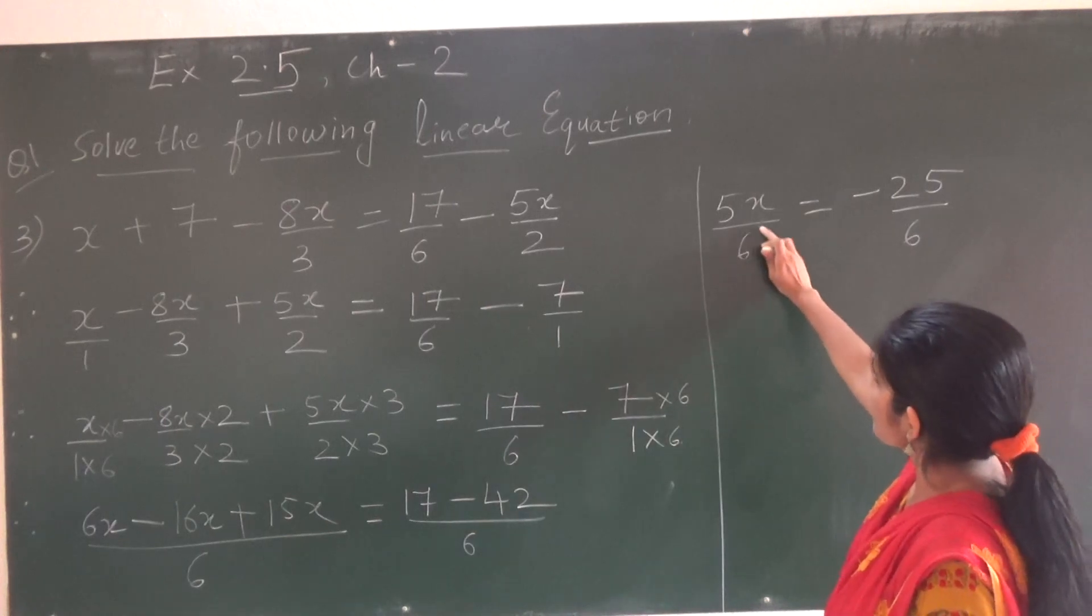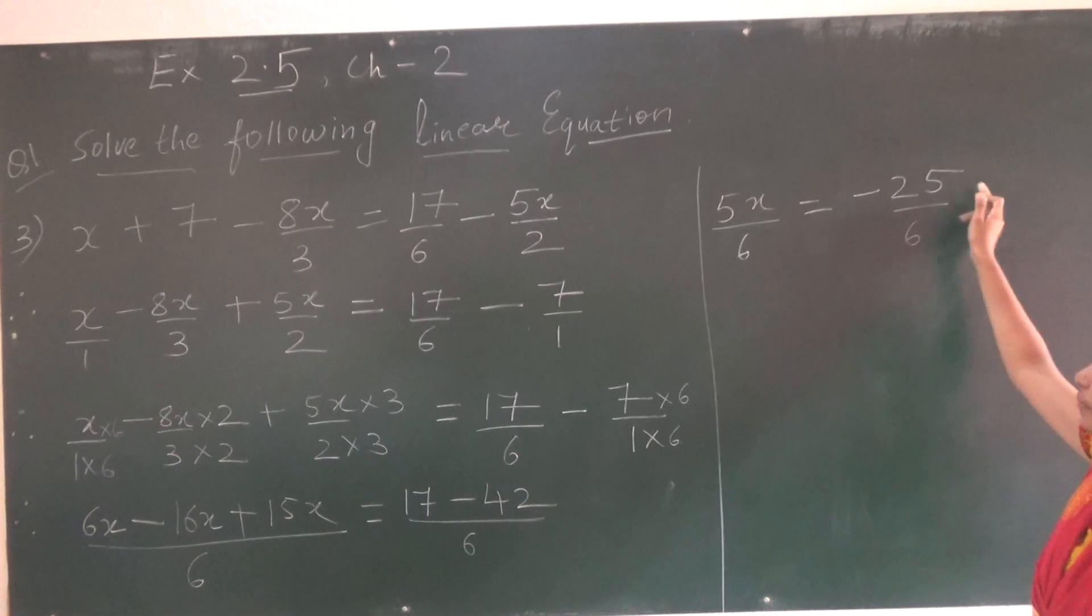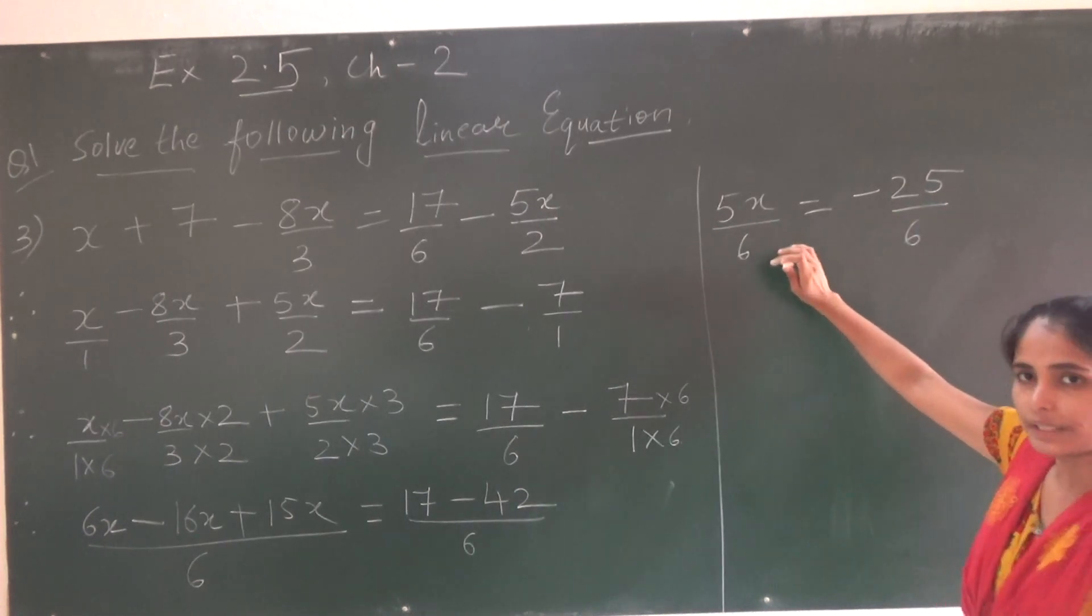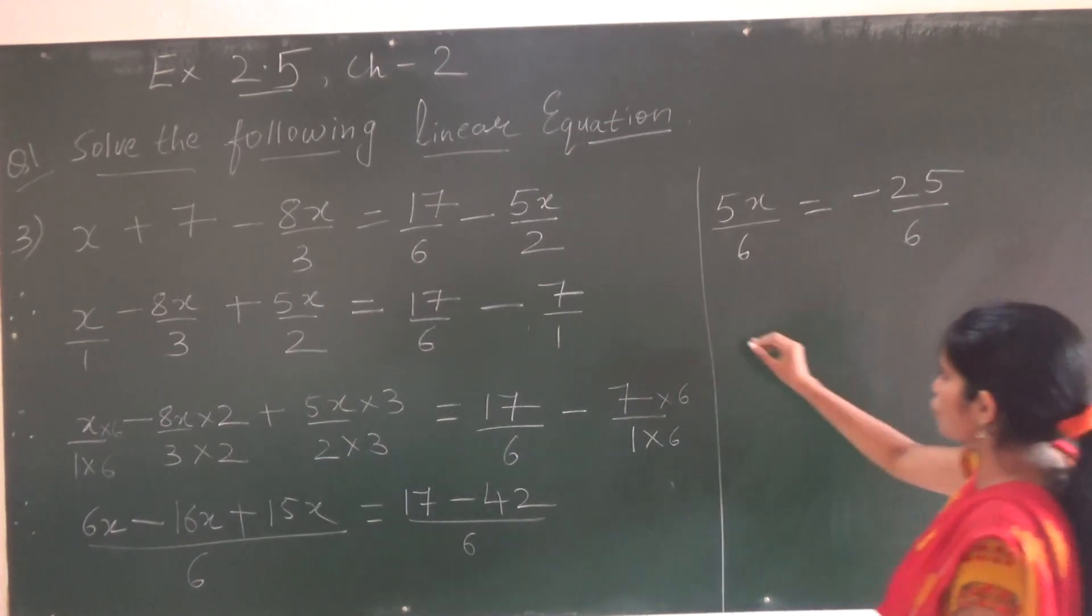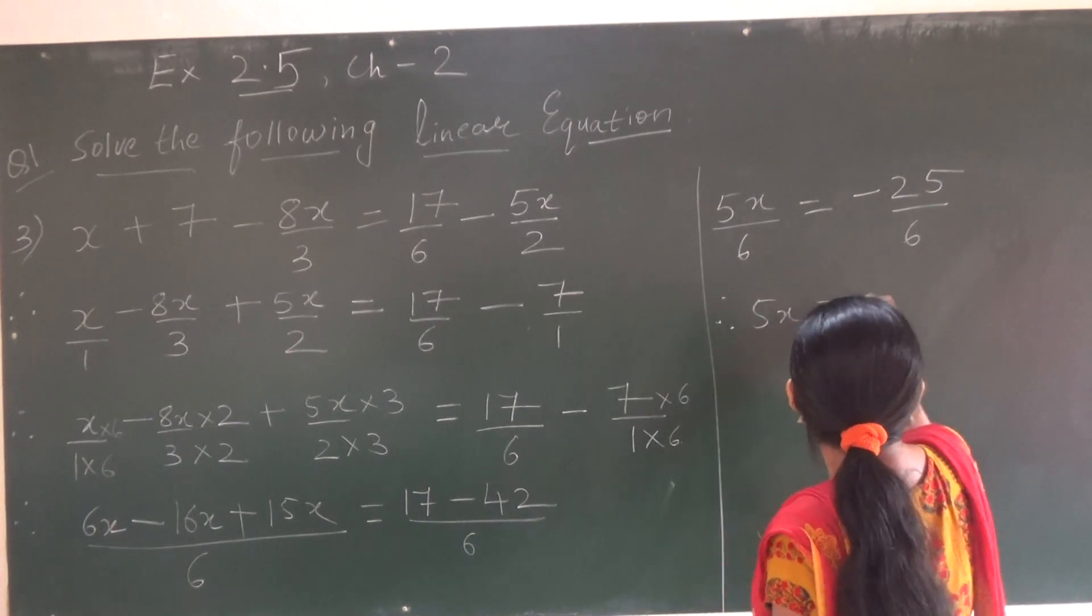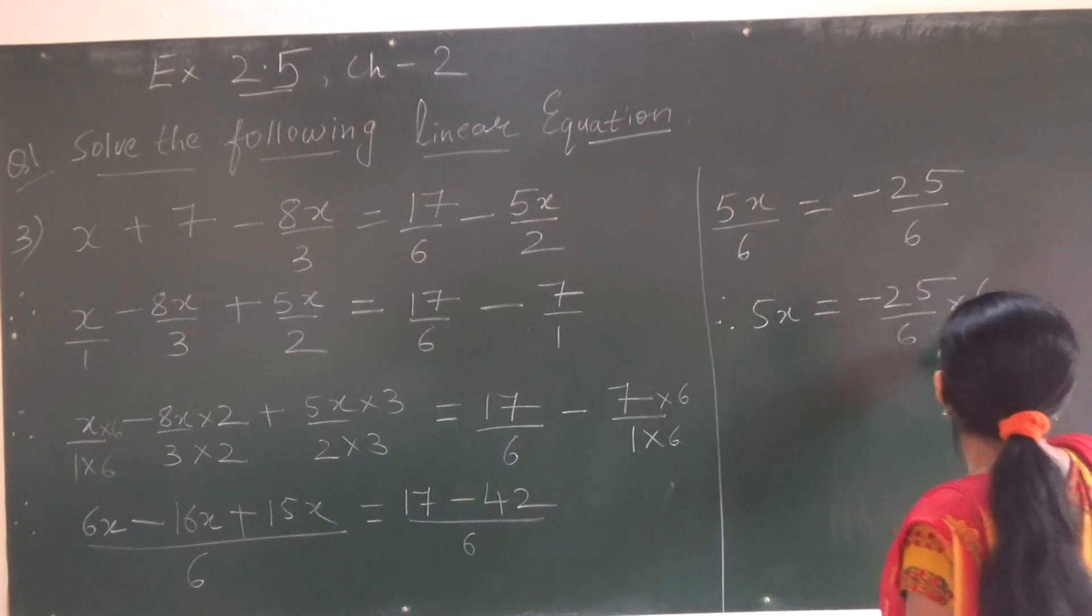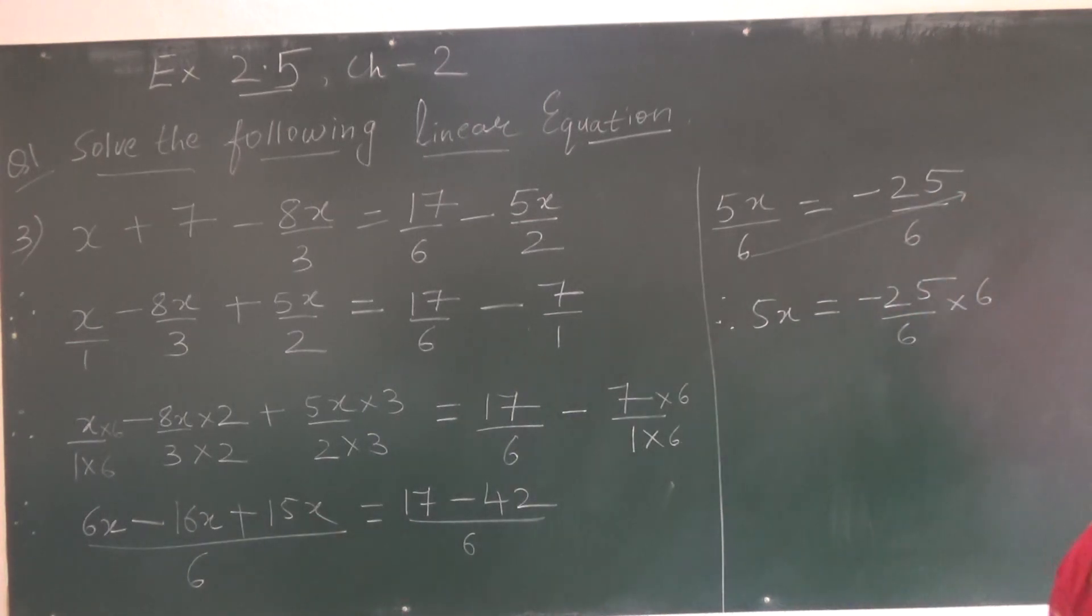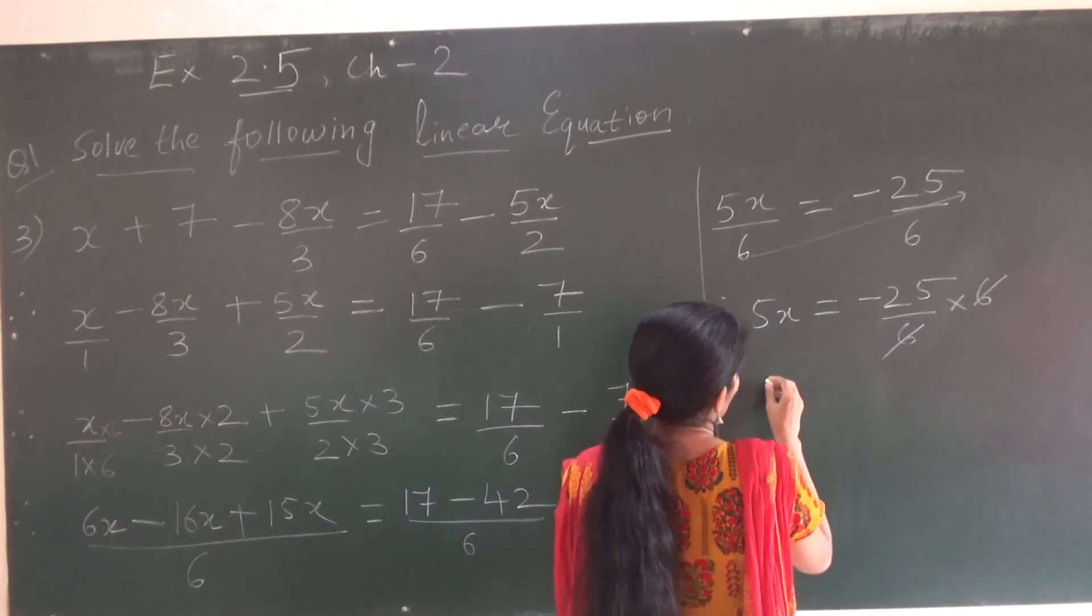Now this 6, where we will take? It will go here in multiplication. Because as I told you before also, 6 is in division. So when we will shift over here to right hand side, it will go in multiplication. So 5x and this side minus 25 upon 6 into 6. This 6 I am taking here in multiplication. So 6 and 6 cancel. Now this 5 is in multiplier, so where it will go? It will go in division.